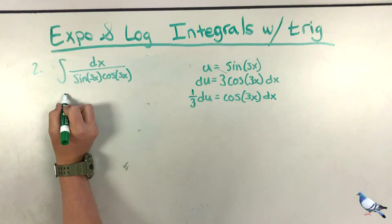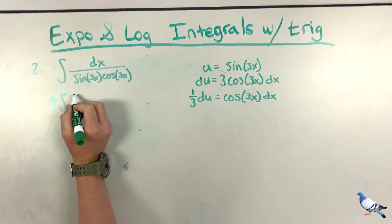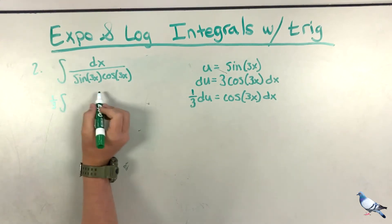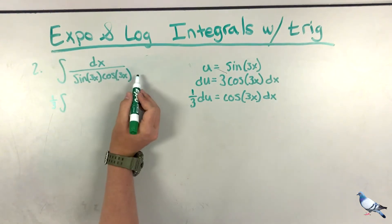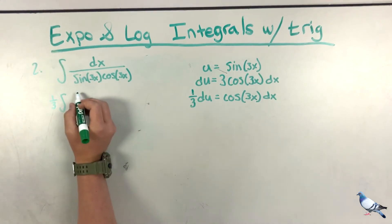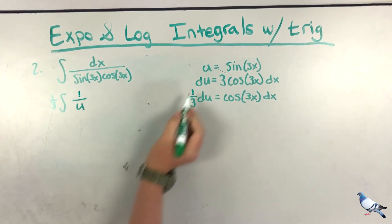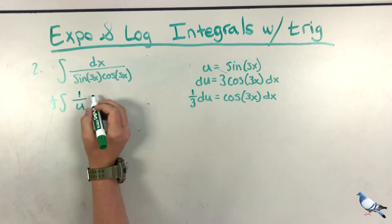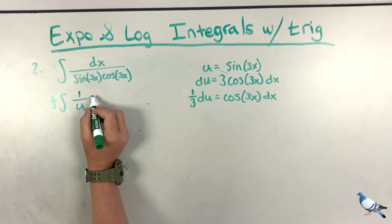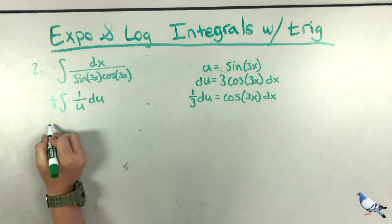Now we rewrite the integral in terms of u. We multiply everything by 1/3 out front, and since cosine(3x) dx is replaced by du, the integrand becomes 1/u du.